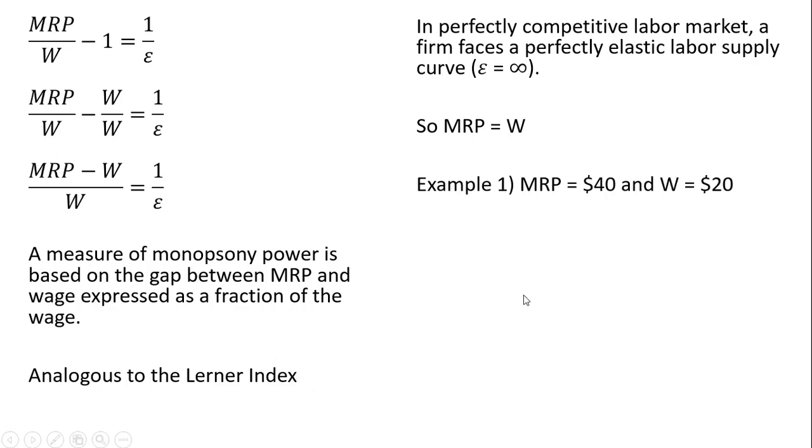Let's do some numerical examples. Example 1: the marginal revenue product is $40 and firms are paying workers $20. Using our measure of monopsony power and substituting in our results, the elasticity of labor supply is 1.